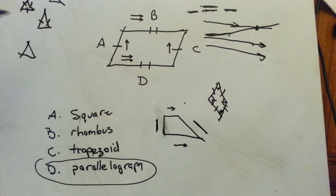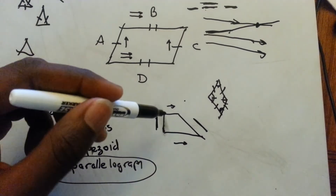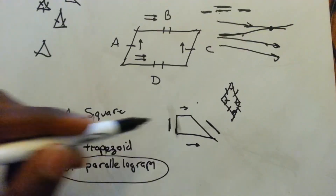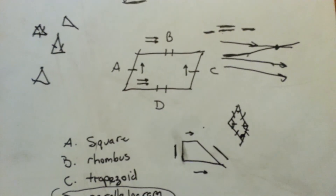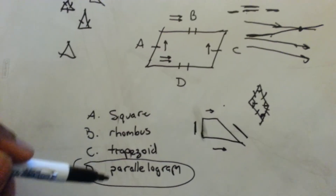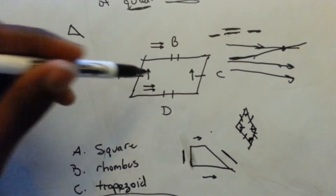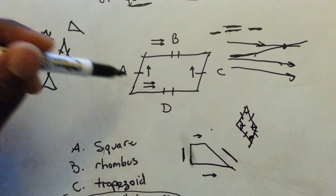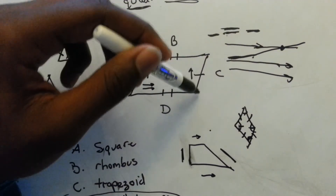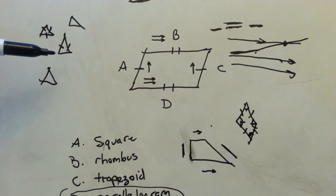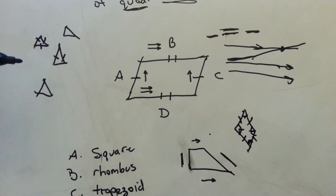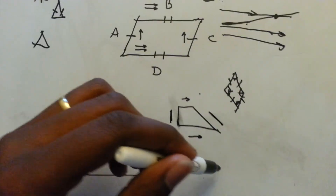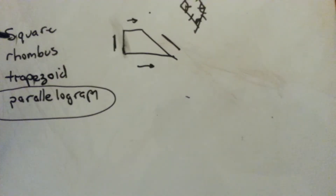Since this figure has two sets of parallel lines, it's not a trapezoid. A parallelogram — which is the correct answer — has two sets of parallel sides: this side is parallel to the opposite side, and this side is parallel to the other opposite side. The opposite sides are also congruent. This is a long explanation, but it's meant to help you understand if you see a figure like this on a test.